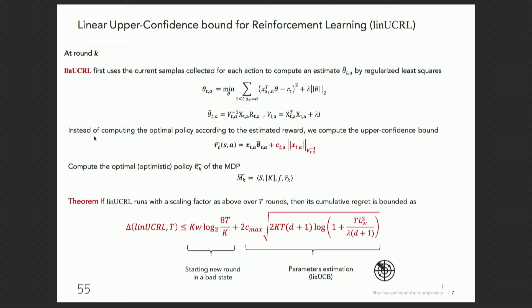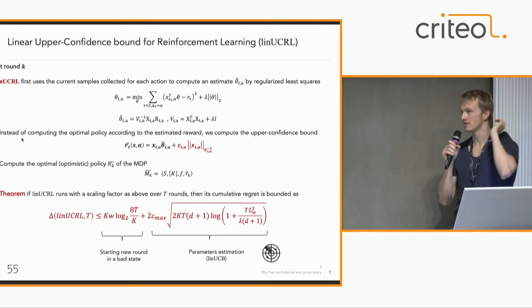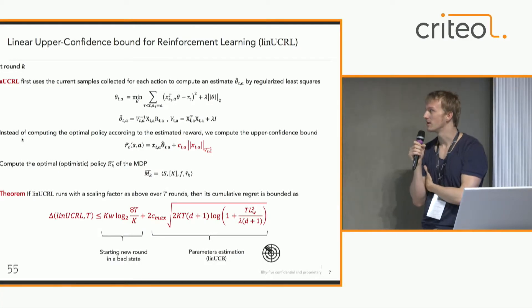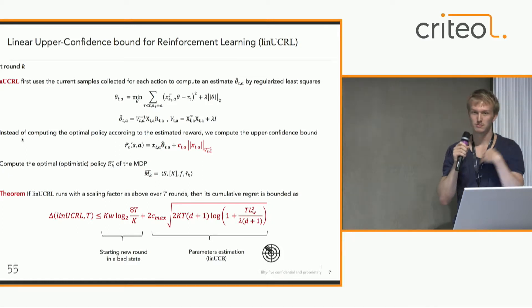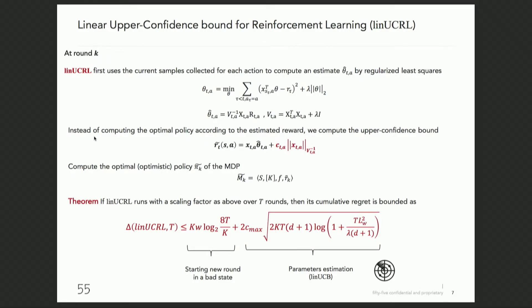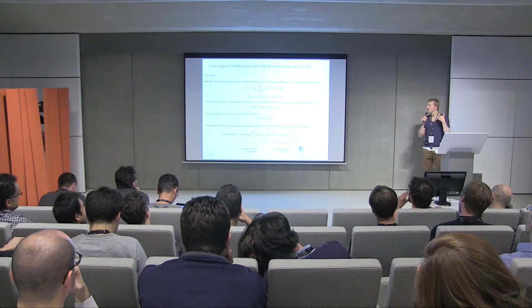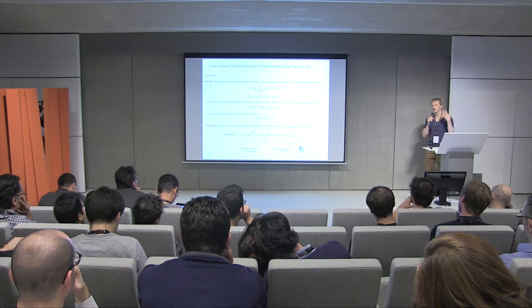So we have an MDP with a policy that we have to find. In order to find this policy, we try to fit the parameter theta of our reward function based on previous pulls done so far and compute confidence intervals on this parameter. We are then able to compute an optimistic value of the reward in each state-action pair, and based on this optimistic value we compute an optimistic policy that we play for a while and update periodically until convergence.